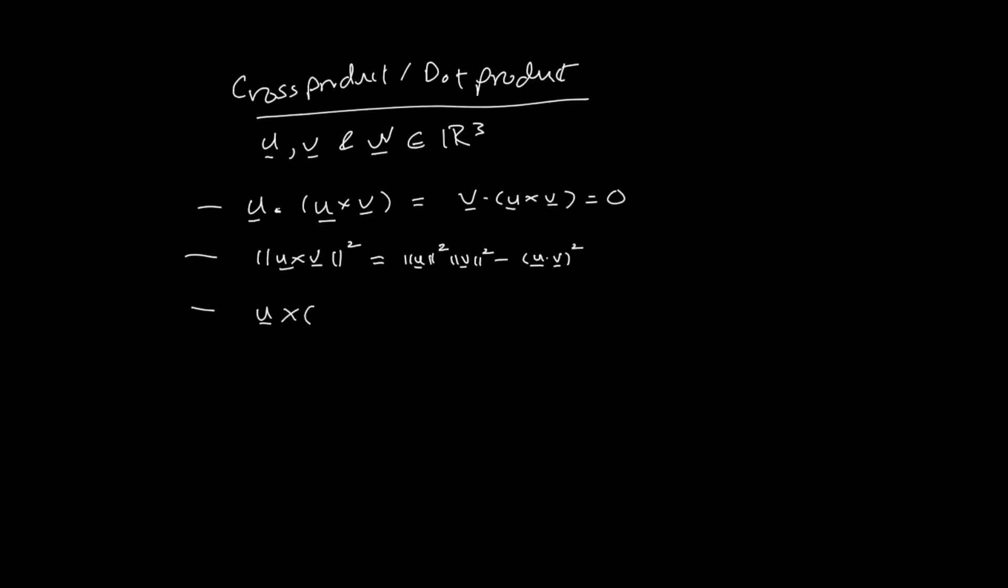Here's another property. In case of three vectors, when we take the cross product of U with V cross W, it is the same as (U dot W) multiplied by the vector V, minus (U dot V) multiplied by the vector W. Again, I'm giving these to you without proofs, just for the sake of knowing these properties. These relationships can be quite easily proven with a little bit of algebra.